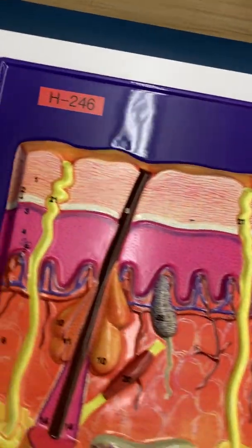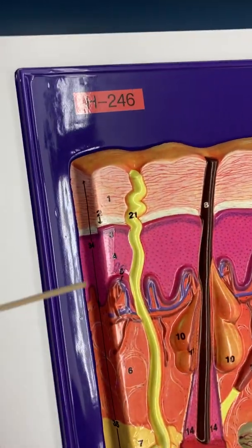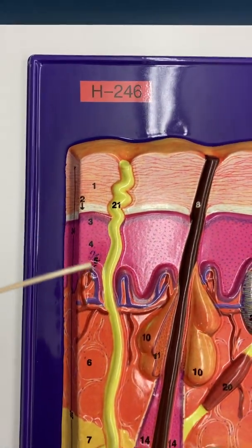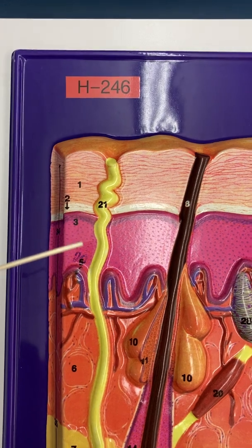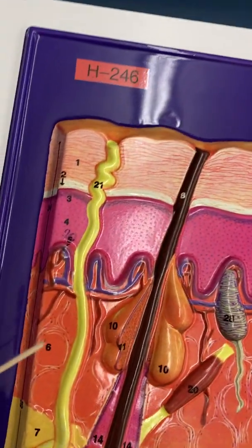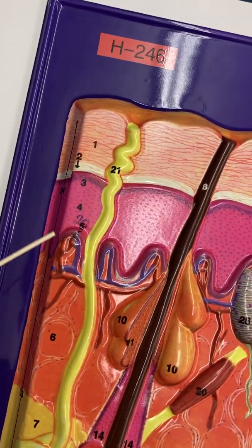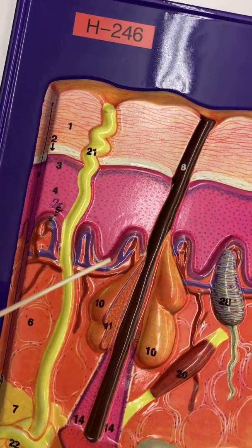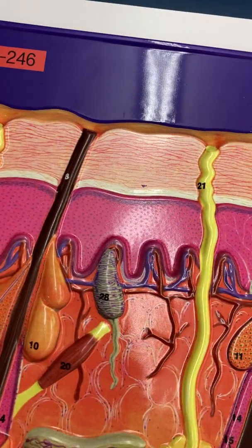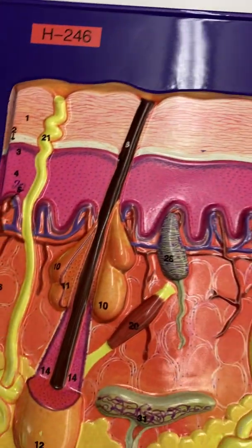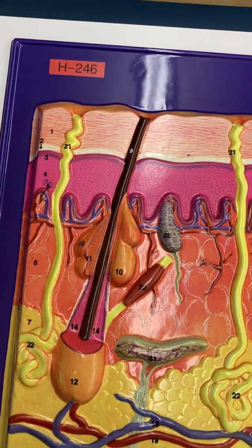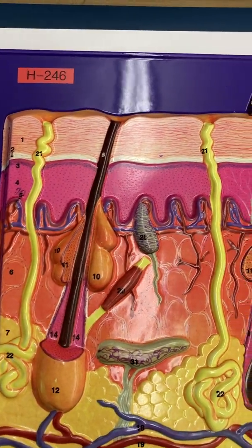The epidermis has five layers that you don't need to know, but that's what these numbers represent. This deepest layer of the epidermis, that is convoluted and dark purple, is the area of rapidly dividing cells — in other words, that's where the stem cells are.